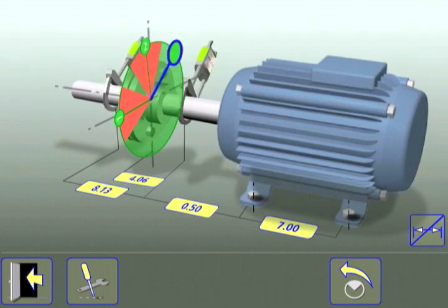Rotate the shafts twice more, allowing the system to automatically take the second and third readings.